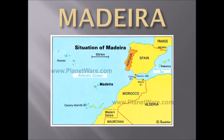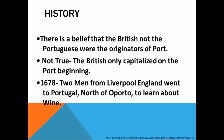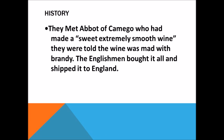Barbera d'Asti DOCG: 85% minimum Barbera grape; up to 15% Freisa, Grignolino, and Dolcetto. Styles: Rosso — must be aged four months minimum; and Superiore — must be aged 14 months minimum.